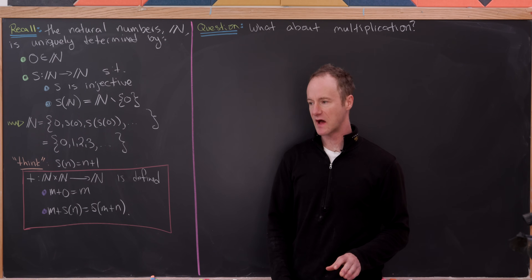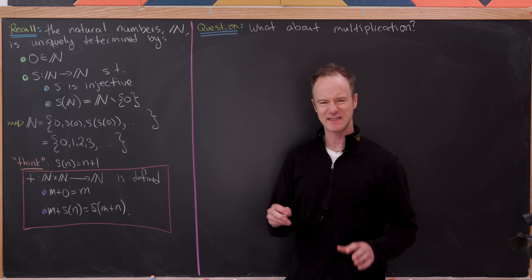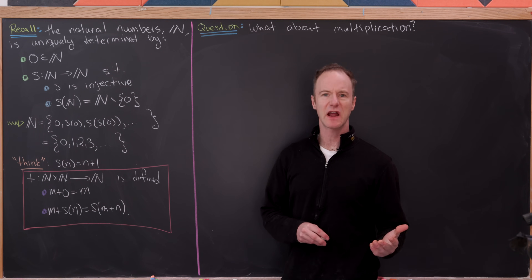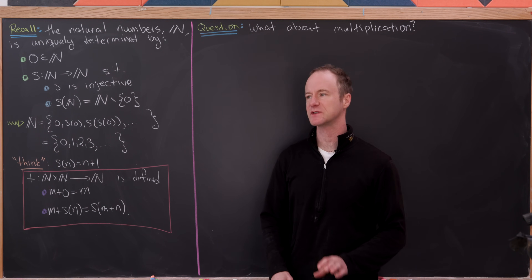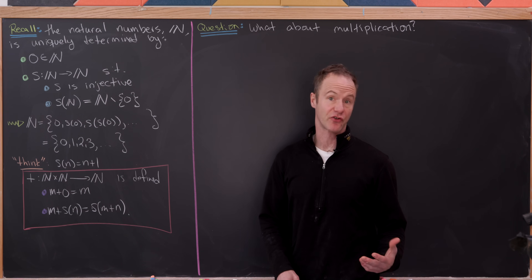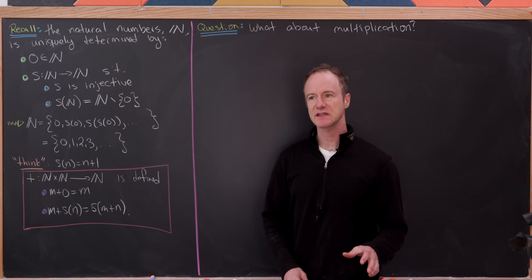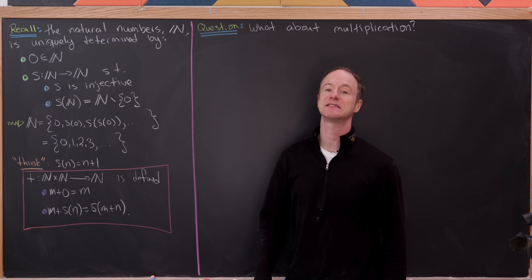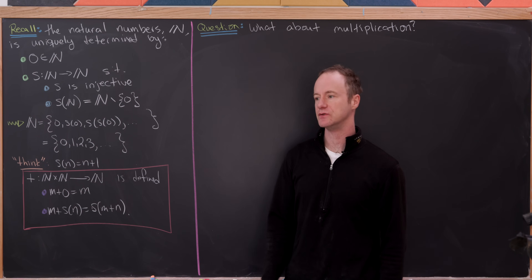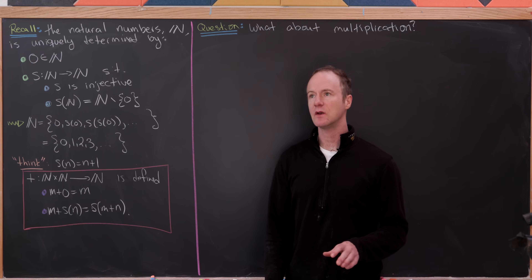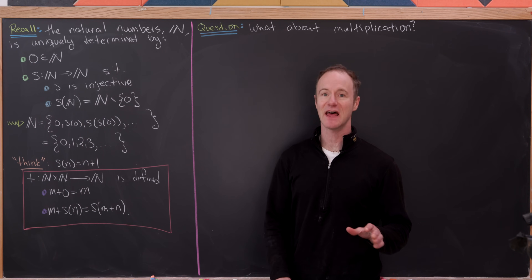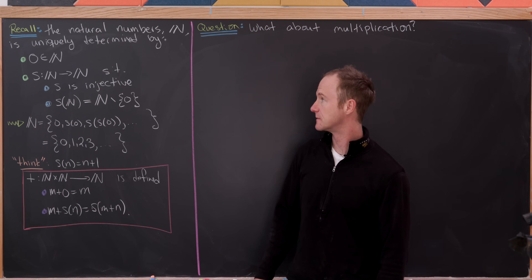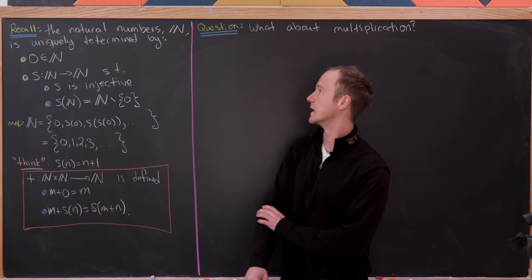When I was in grad school I took a set theory class where we learned about the set theoretic framework of arithmetic. I thought I'd revisit some of those ideas for some videos, and this is the third of those videos. Previously we looked at how the natural numbers were defined axiomatically along with addition of two natural numbers, and we also looked at a set theoretic model of natural numbers. Today we're going to look at multiplication, but before we do that let's recall something real quick.